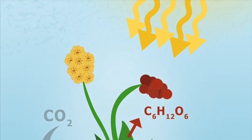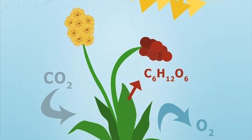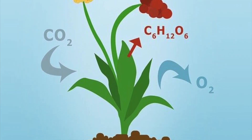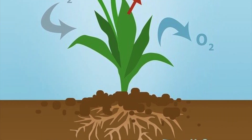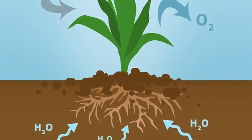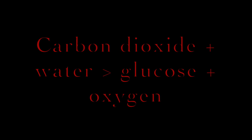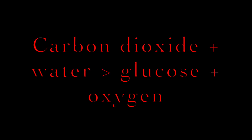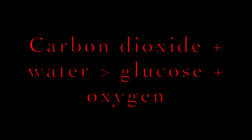I'm Sark and in this video we are looking at photosynthesis. First of all let's look at the process of photosynthesis. Plants can make their own food by photosynthesis and the equation is: carbon dioxide and water is turned into glucose and oxygen.